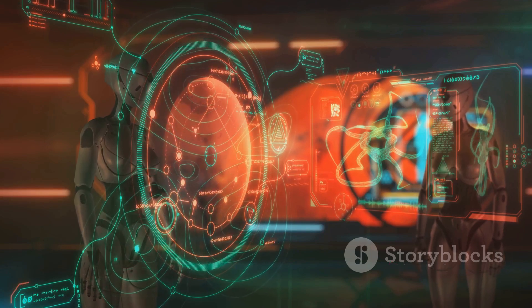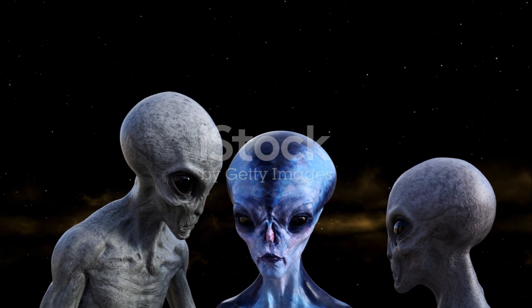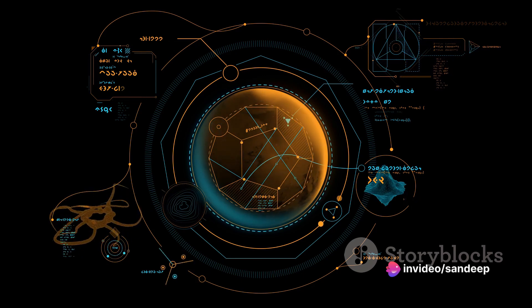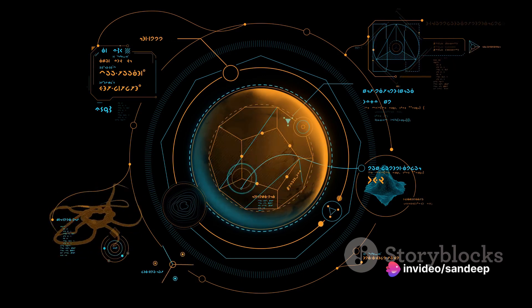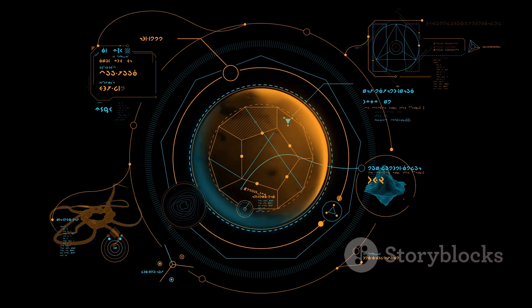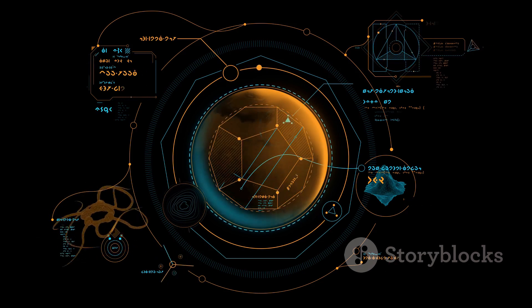The sixth element involves the civilizations that might develop technology advanced enough to send signals into space. Lastly, the seventh and final factor is the length of time such civilizations release detectable signals into space. This potent combination of astrophysics, biology, chemistry, and a hint of optimism gives birth to an equation that serves as our compass in the unfathomable cosmic expanse.